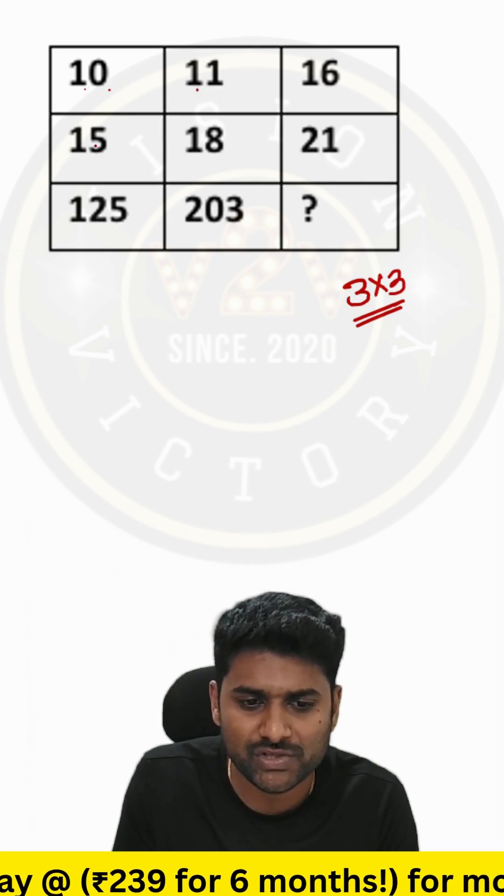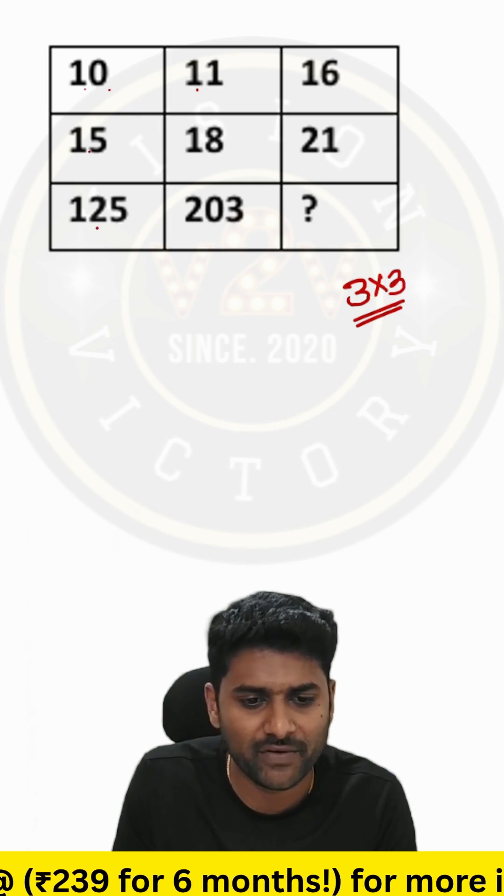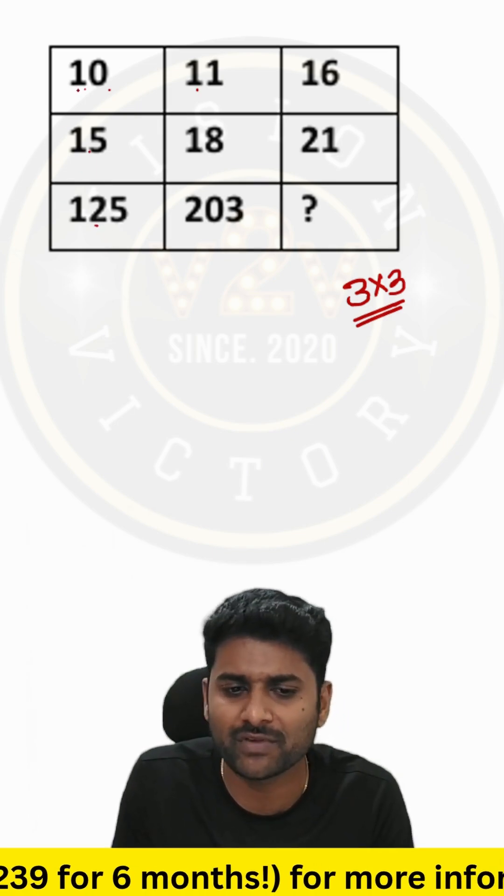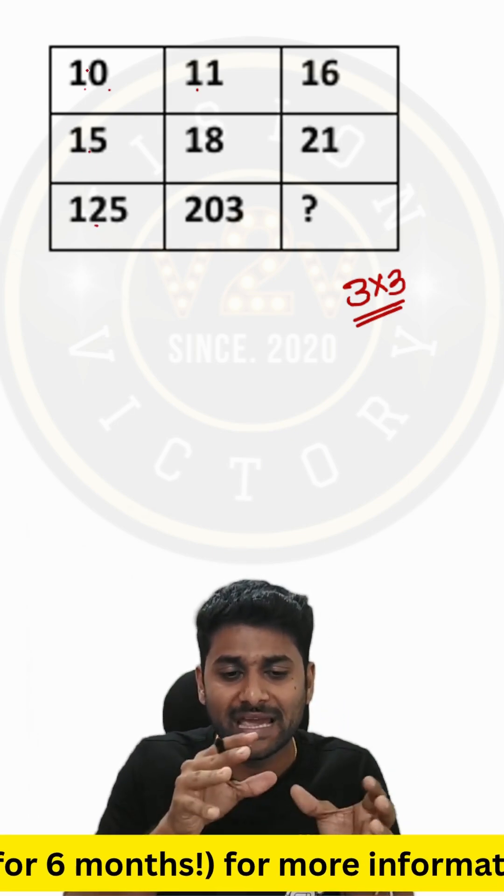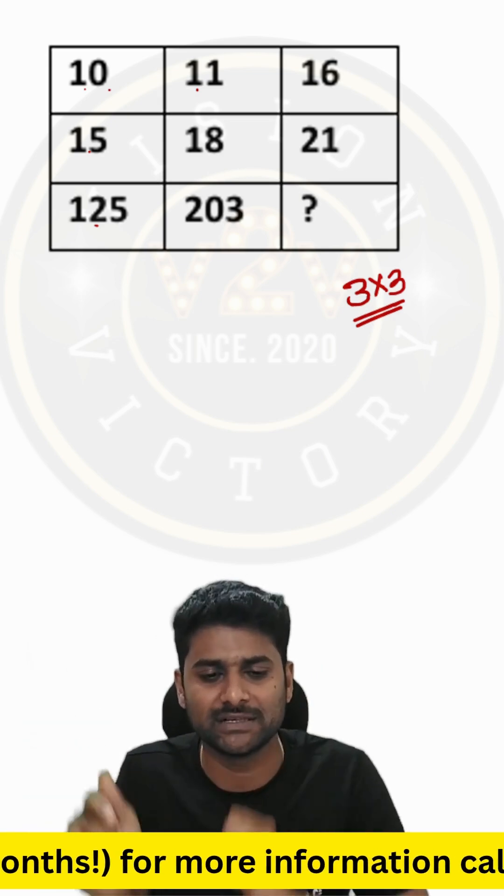In the same way, with the column, use 10 and 15 and you will get 125. Use 125 and 15, you will get 10. Use any two boxes and it will give the resultant of the third box.